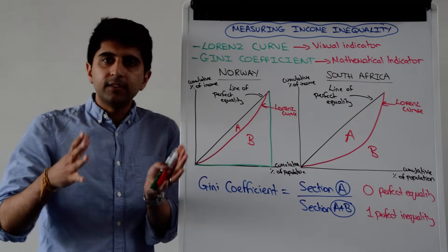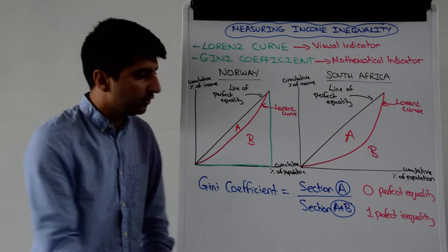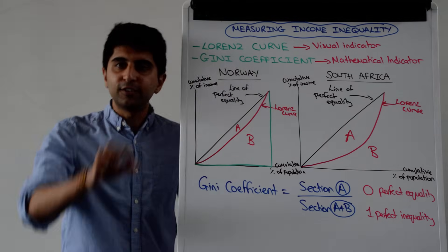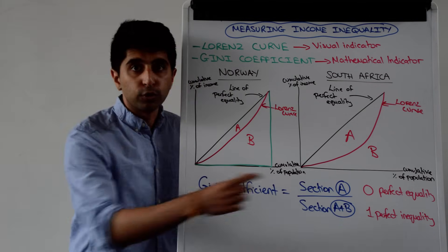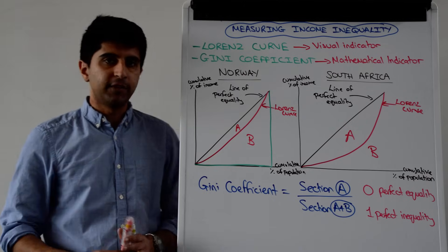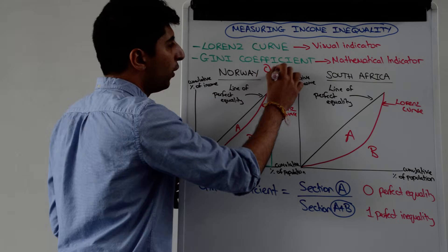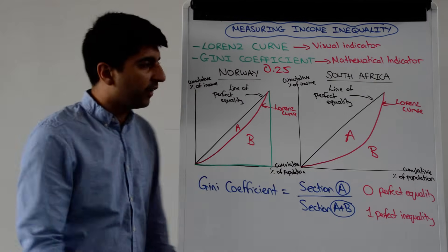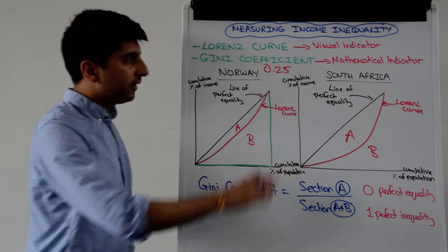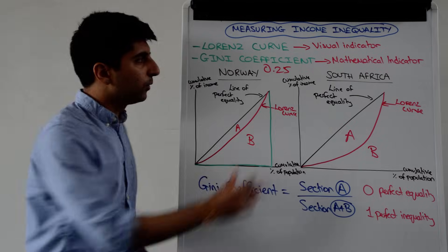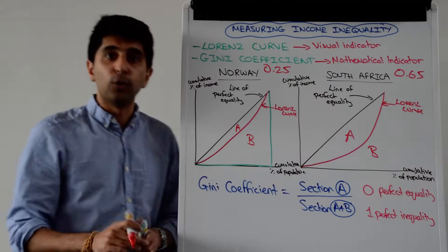We always see numbers between 0 and 1. The closer the Gini coefficient is towards 0, the more equal the distribution of income; the closer towards 1, the more unequal. Norway has a Gini coefficient hovering around 0.25 — quite close to 0 and one of the most equal distributions of income in the world. South Africa's is around 0.65 — much closer to 1 and one of the most unequal in the world.